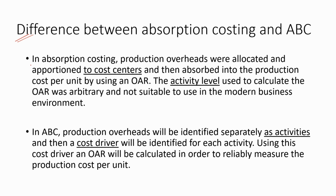Now let's discuss the difference between absorption costing and activity-based costing. ABC is an advanced absorption costing technique. In absorption costing, production overheads were allocated and apportioned to cost centers and then absorbed into the production cost per unit using an OAR — the overhead absorption rate. The activity level used to calculate the OAR was arbitrary and not suitable for the modern business environment. In ABC, production overheads will be identified separately as activities, and then a cost driver will be identified for each activity. Using this cost driver, an OAR will be calculated to reliably measure the production cost per unit. Under ABC, this OAR is known as the driver rate.